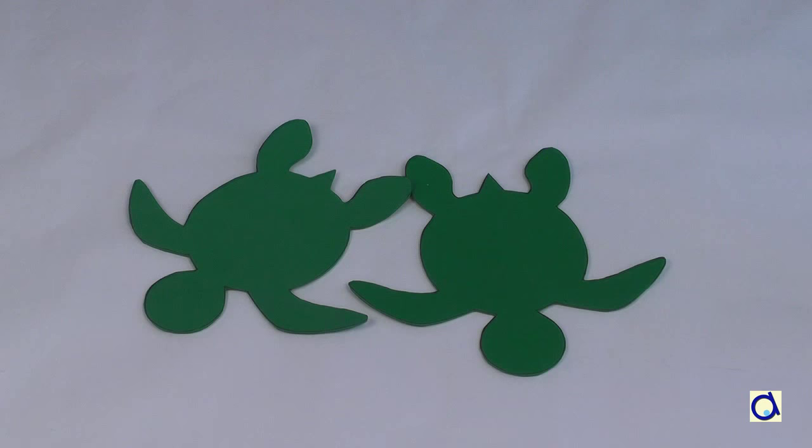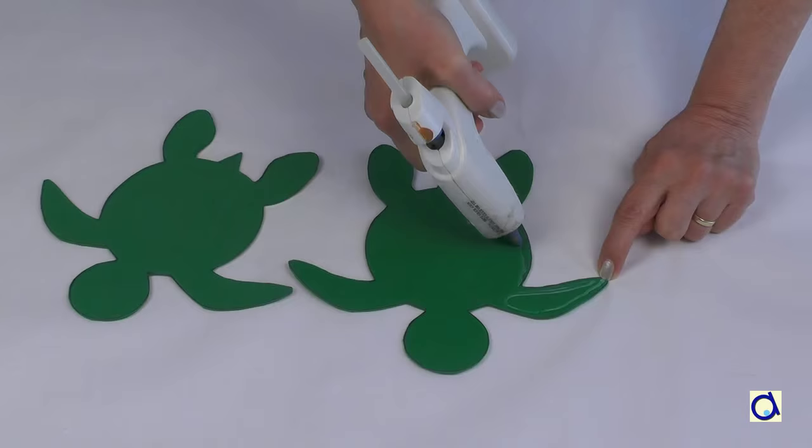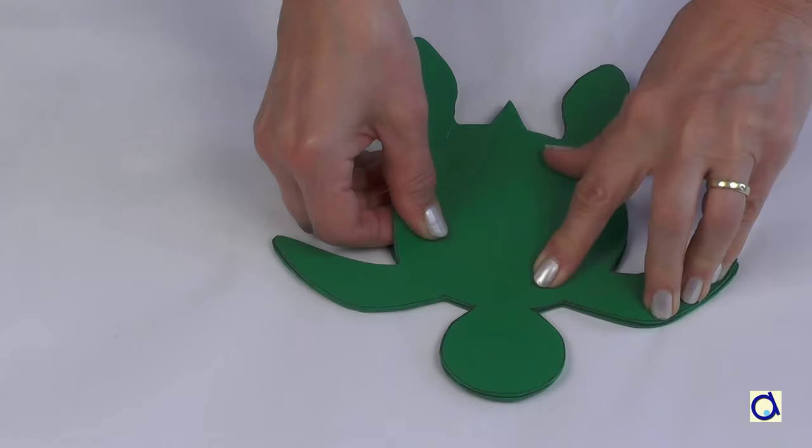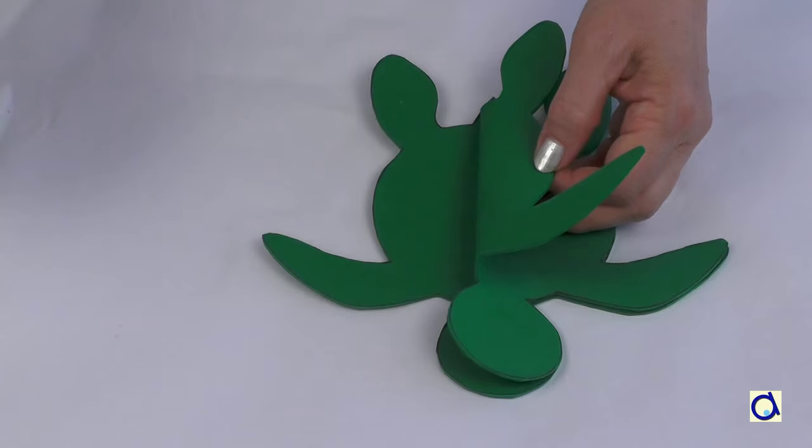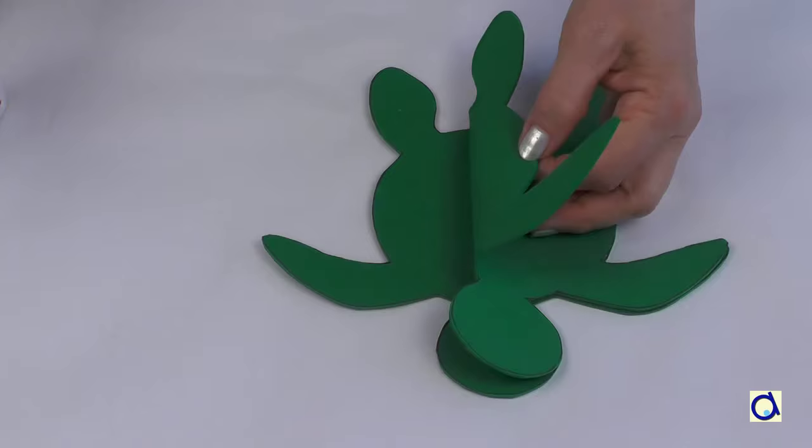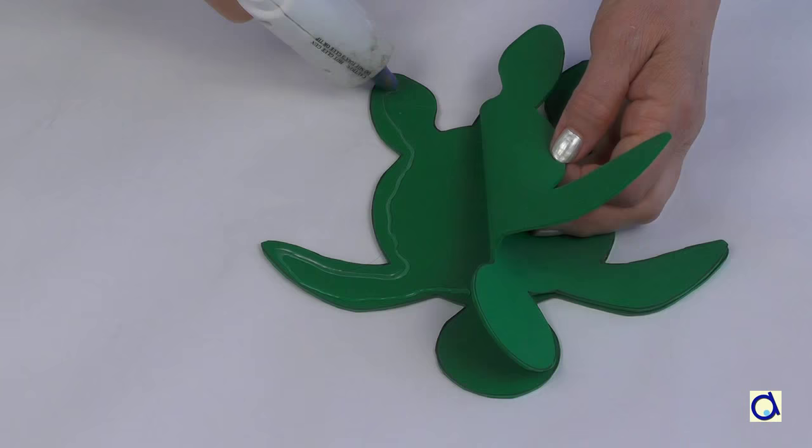Glue the two layers of foam together with hot glue or a special glue for foam sheets. Start by gluing the body and the legs together but not the head. If you use hot glue, first glue one side of the body and then the other side. Otherwise, the glue will cool down before you have time to glue the two layers of foam.